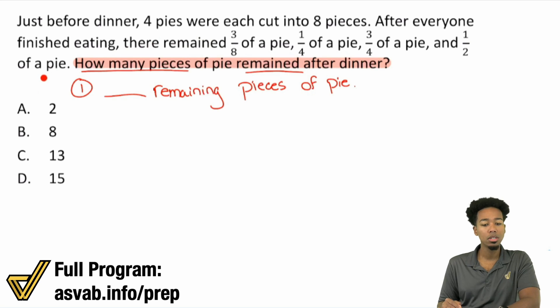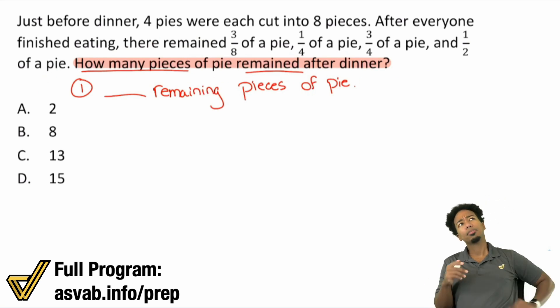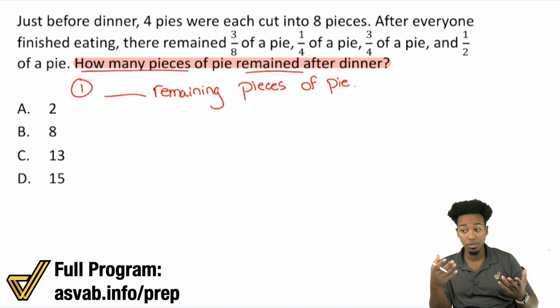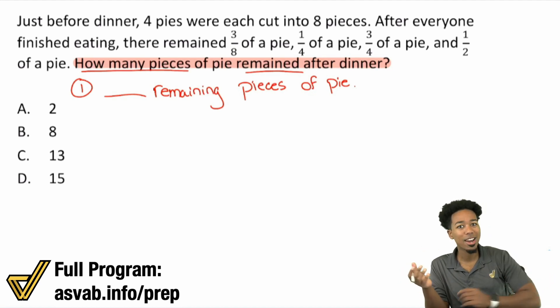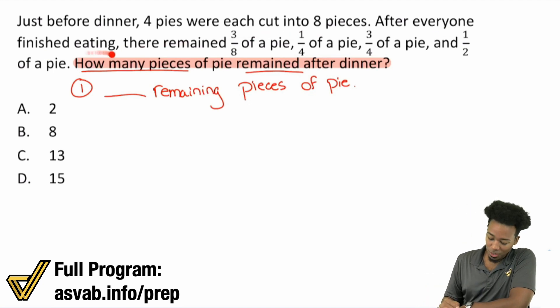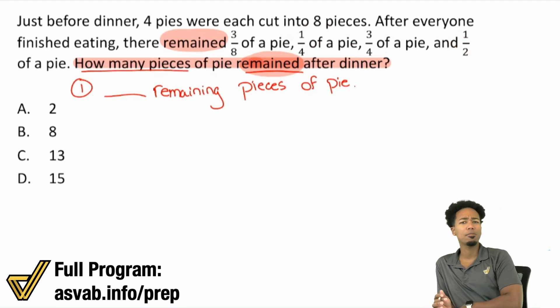Sounds good. Then it says, how many pieces of pie remained after dinner? So think about it. If we're looking for how many pieces are left, did they give us anything that has to do with how many pieces were eaten or how many were left? Answer is yes. Right here, look, after everyone finished eating, look at the word right here, keyword, remained. They were left. They remained three eighths, a quarter, three quarters, and half.